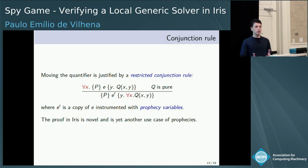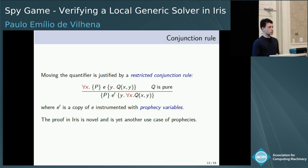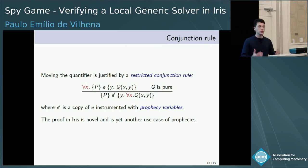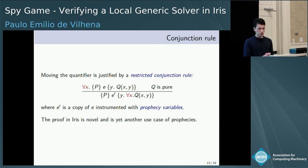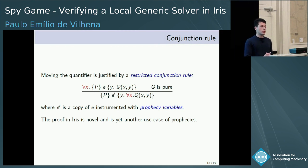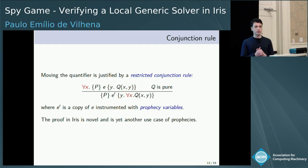What justifies this movement of universal quantification is what we call a restricted conjunction rule. It is restricted because we assume the postcondition is pure — it only talks about mathematical formulas and does not mention resources. As hypothesis, we take a collection of Hoare triples indexed by x, and as a conclusion we have one Hoare triple where the postcondition has the universal quantification. We proved this inference rule in Iris, and it is yet another use case of prophecy variables.